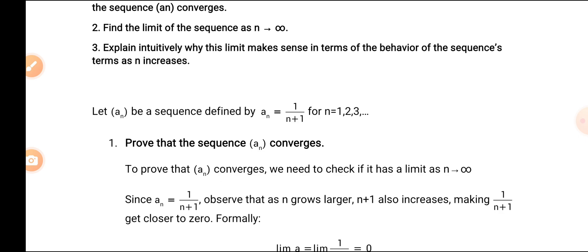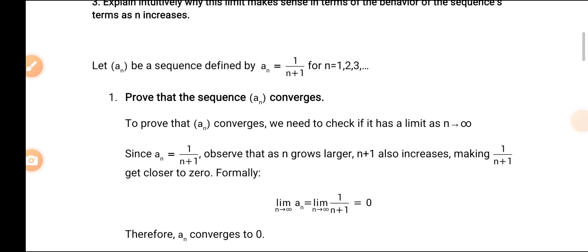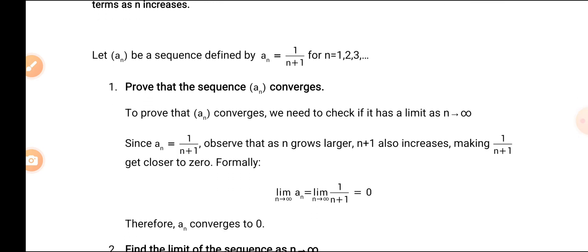Let An be a sequence defined by An = 1/(n+1) for n = 1, 2, 3, and so on. For the first part, we are told to prove that the sequence An converges. To do this, we check that the limit as n approaches infinity exists. Since An = 1/(n+1), as n grows larger, n+1 also increases, making 1/(n+1) get closer to 0.